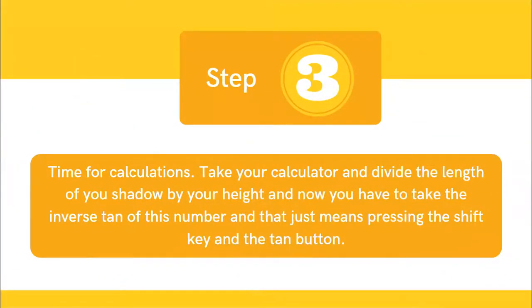Step three. Take your calculator and divide the length of your shadow by your height and now you have to take the inverse tan of this number and that just means pressing the shift key and the tan button.